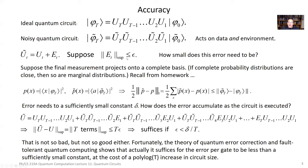I'm going to characterize the size of each error using the sup norm — the operator norm of E_t, which is the largest singular value of that operator. Suppose that for each gate the error is bounded by some hopefully small constant ε. Now we'd like to know: when we put together T of these gates, if we want to get about the right answer, how small does that error need to be, and how does it scale with the total number of gates?